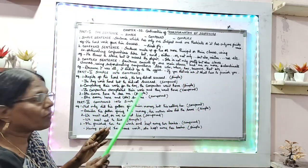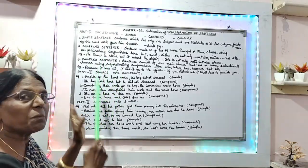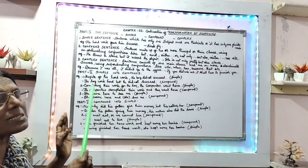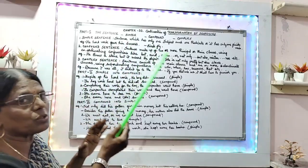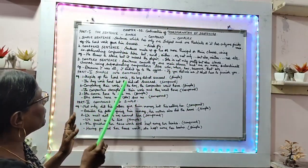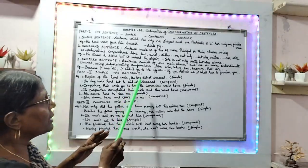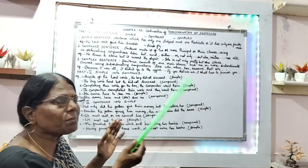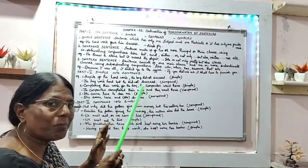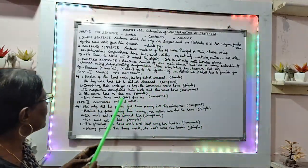Part 2. Here we learn simple to compound — how simple sentences are changed into compound sentences. Example: 'In spite of his hard work, the boy did not succeed.' That is a simple sentence. Changed to compound: 'The boy worked hard, but he did not succeed.'